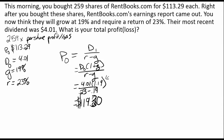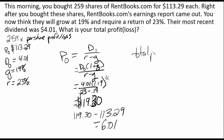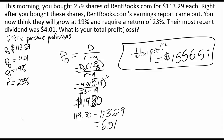That can make a big difference if you are an investor managing client money. So we now have $119.30 minus $113.29 to tell us the profit per share, which gives us $6.01. That means our total profit is going to be equal to $1,556.59.